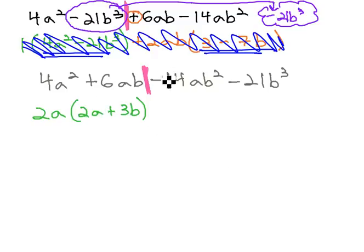On the right side, using the negative from the front term, our GCF is going to be negative 7b squared. This leaves us with 2a plus 3b, being very careful with signs as we factor out a negative.